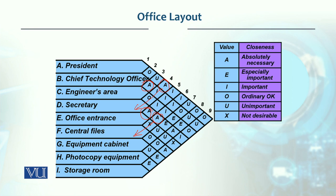It is absolutely necessary that the Secretary is near the Office Entrance. Central Files should also be near the Secretary's office because files will frequently be needed. It is extremely important that the Equipment Cabinet is nearby, and Photocopy Equipment is also absolutely necessary to locate close. So that means one, two, three, four absolutely necessary relationships for the Secretary.